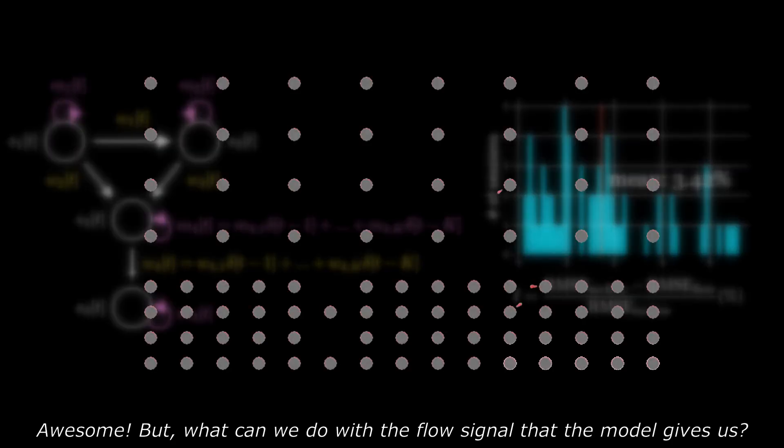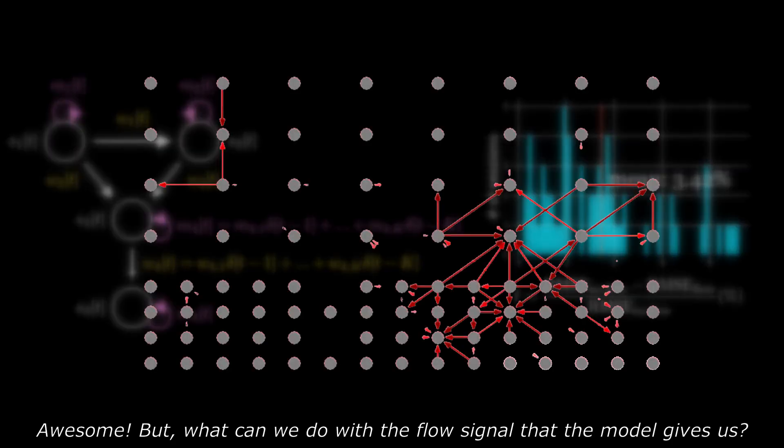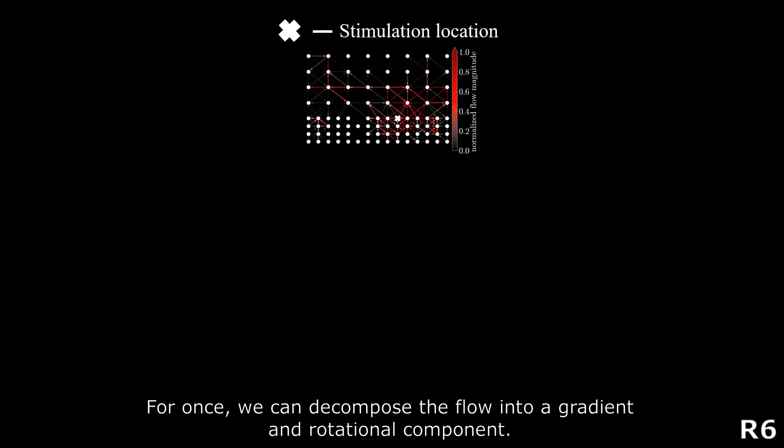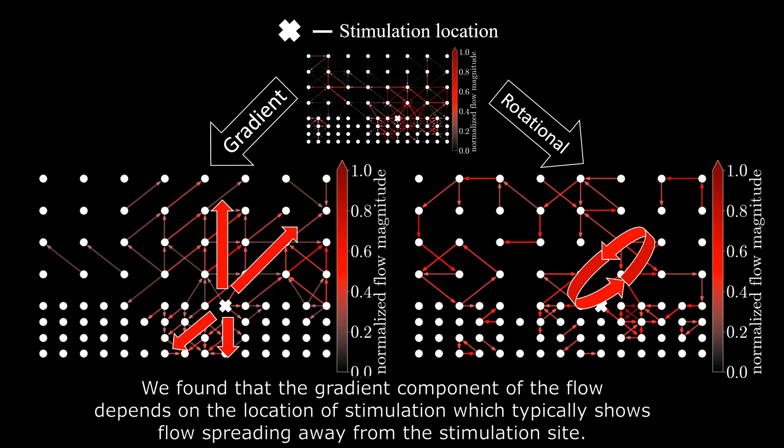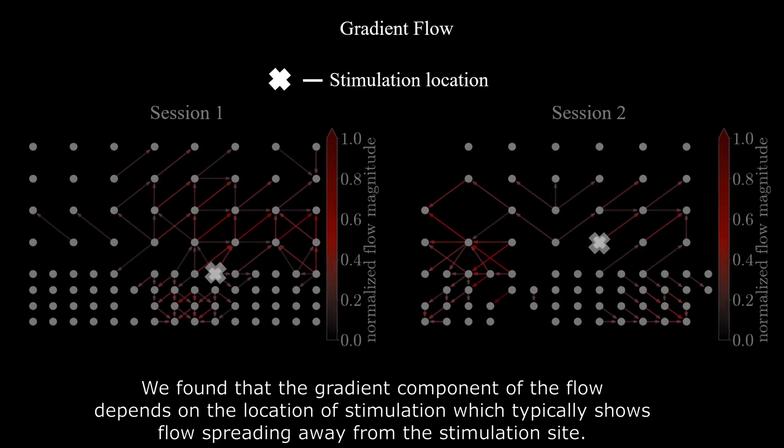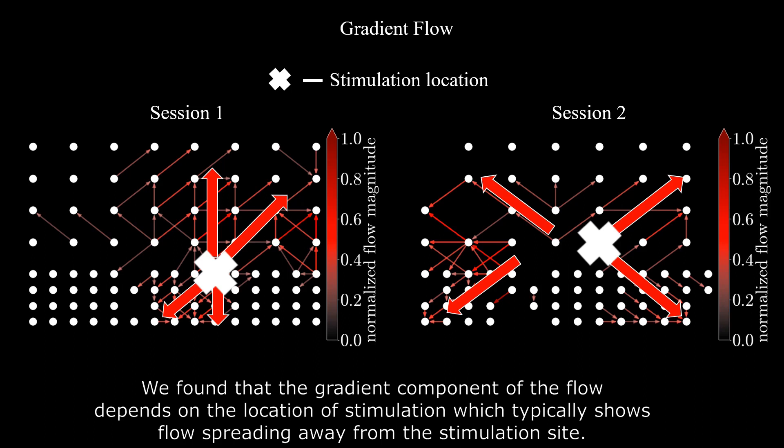Awesome! But what can we do with the flow signal that the model gives us? For one, we can decompose the flow into a gradient and a rotational component. We found that the gradient component of the flow depends on the location of the stimulation, which typically shows flow spreading away from the stimulation site.